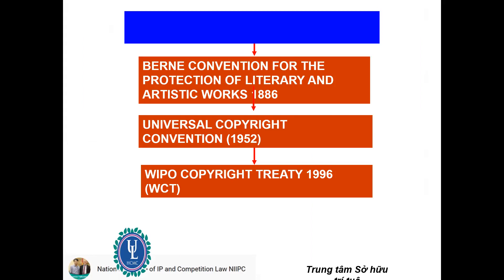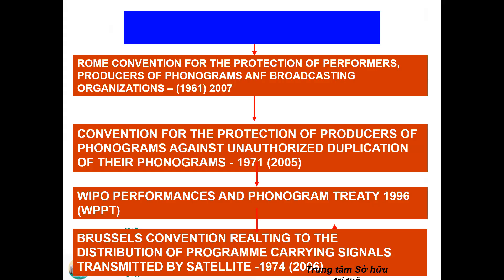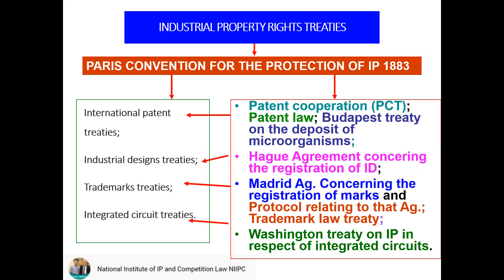The most important one is the Bern Convention. Beside the Bern Convention, we have the Rome Convention, the WIPO Performances and Phonograms Treaty, and the Brussels Convention. For industrial property, we have the Paris Convention for the Protection of Industrial Property, the Patent Cooperation Treaty (PCT), the Hague Agreement, the Madrid Agreement, and the Washington Treaty.